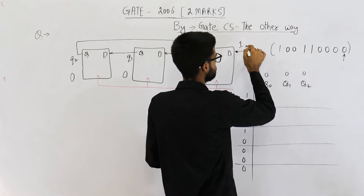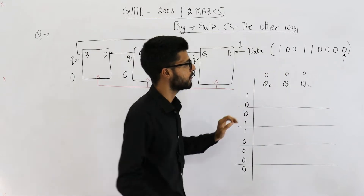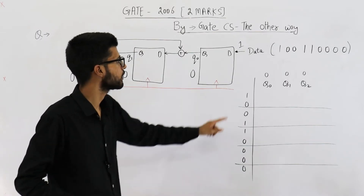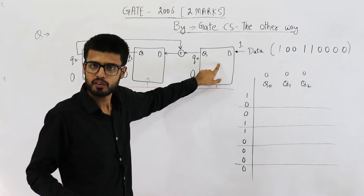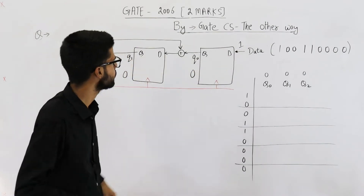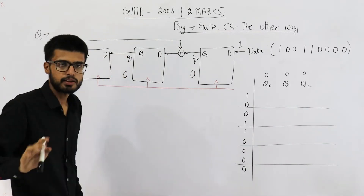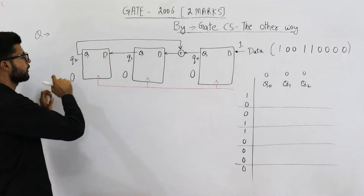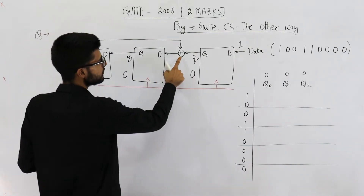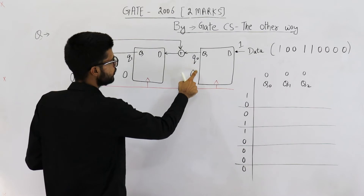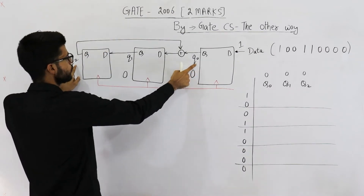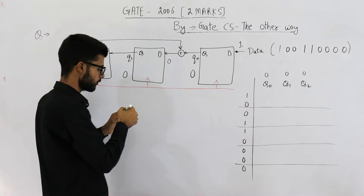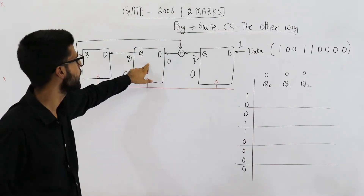So let's begin. Now we have applied the first bit and we are ready to give the clock. Let's see what will happen just before the clock cycle. This input is 1. Will the flip-flop react? No, it won't react until a clock is received. The initial state is given as: Q0 is 0, Q1 is 0, Q2 is 0. So I've written 0, 0, 0 as the values of Q0, Q1, and Q2. Now this is a XOR gate. Its inputs are Q0 and Q2, both of which are 0. So 0 XOR 0 will be 0. We have applied a 0 here, but this flip-flop won't react until a clock is given.